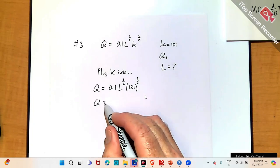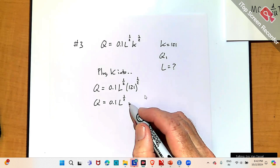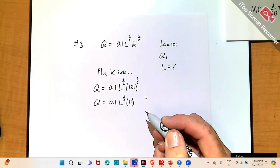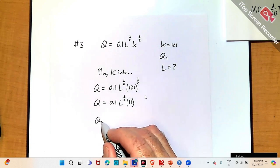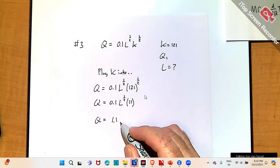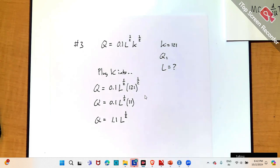You can simplify that. 0.1 times L to the one half. Square root of 121 is 11, right? So, 0.1 times 11 is what? Is that 1.1? You guys correct me if I'm wrong. How does that look?